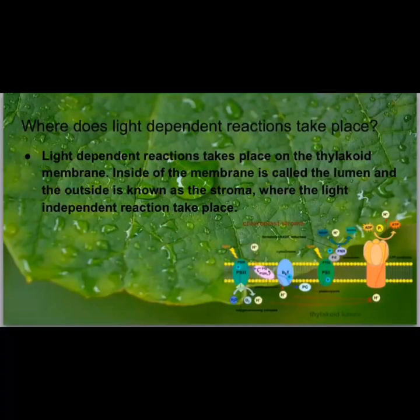Light-dependent reactions take place on the thylakoid membrane. Inside of the membrane is called the lumen, and the outside is known as the stroma, where the light-independent reaction takes place.